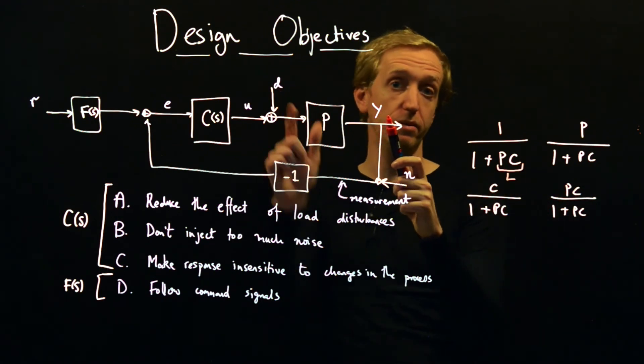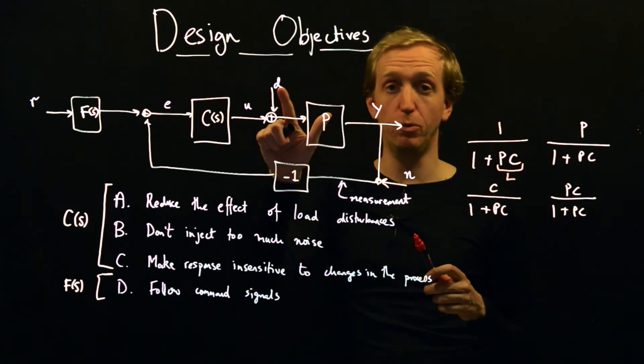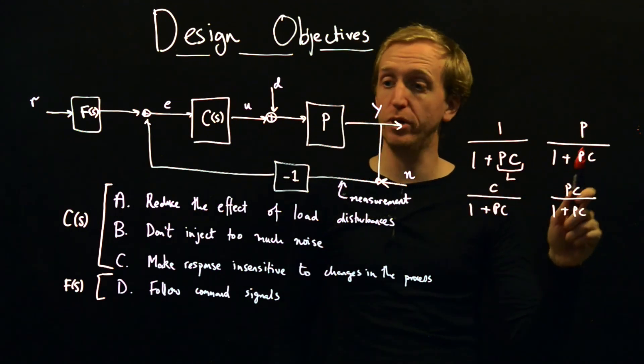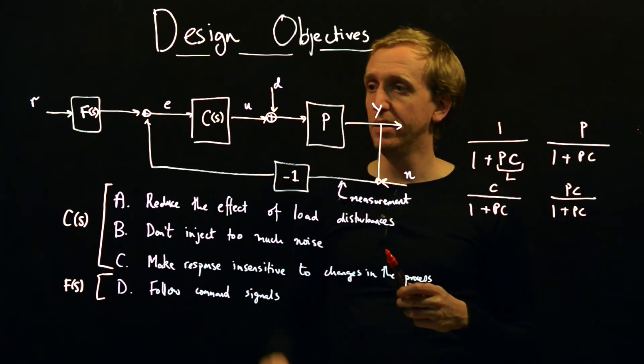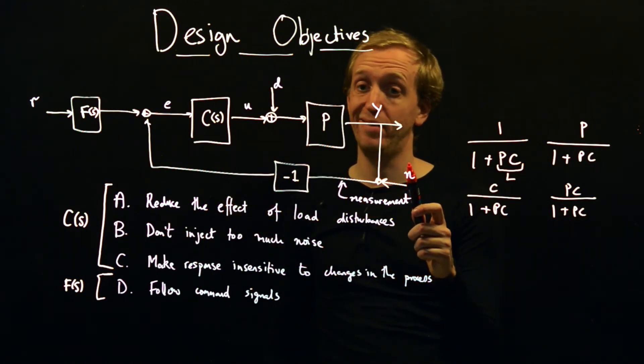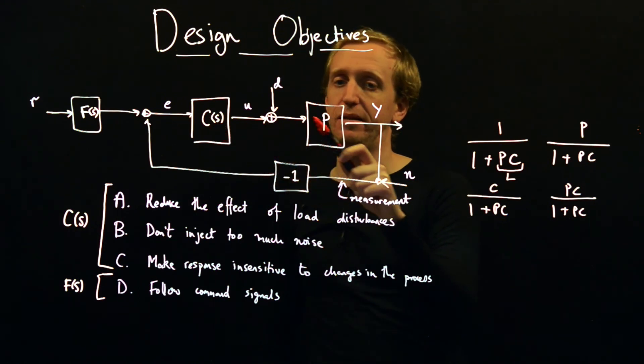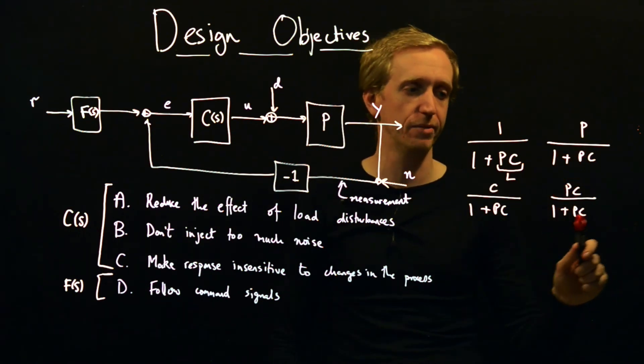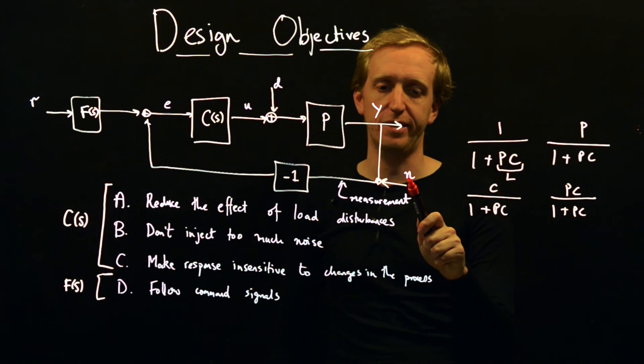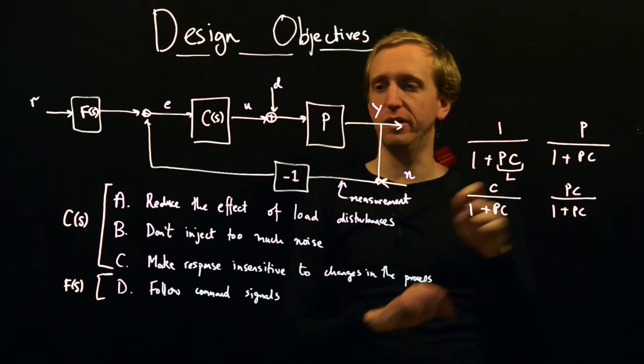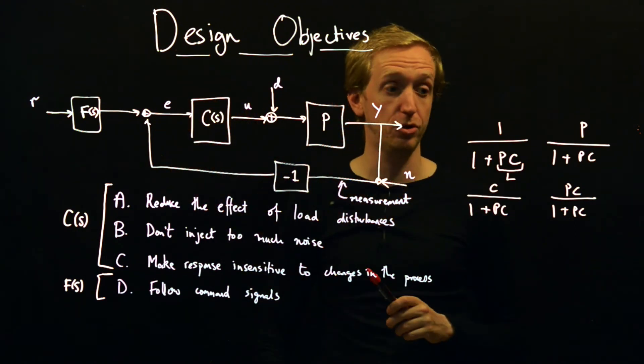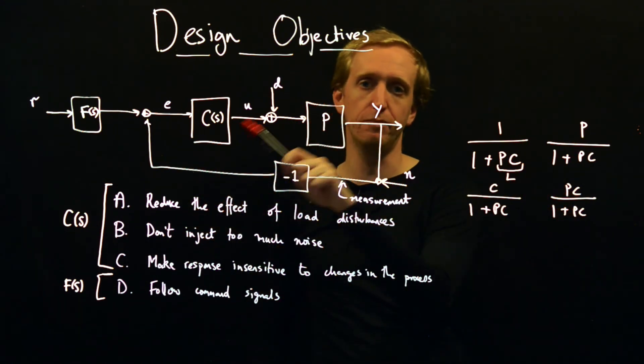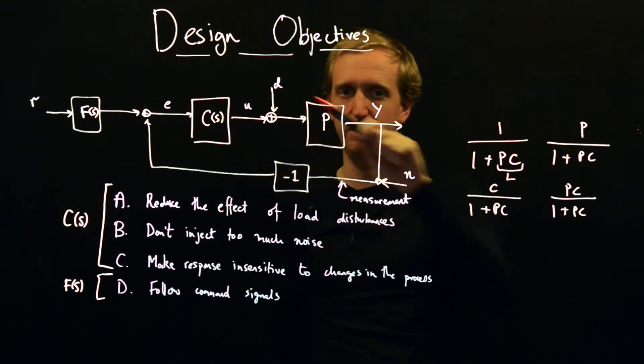So here, if we want to look at the closed loop transfer function from D to Y, well, P lies between D and Y. So P goes in the numerator and then 1 plus PC in the denominator. If we want to look at the transfer function from N to Y, well, now we've got minus 1 times C times P. So that doesn't actually appear here, but it's kind of covered by this one with a minus sign in it. So this transfer function here is corresponding to the effect of your noise on your output. And you can sort of match various ones up to various input-output relationships in this picture.